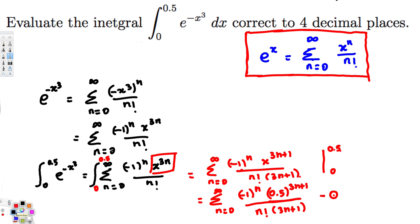For n=0: negative 1 to the power 0 is 1, and 0.5 to the power of 3 times 0 plus 1 equals 0.5 to the first power, which is 0.5. The denominator is 0 factorial times 1, which is 1. So the first term is 0.5.